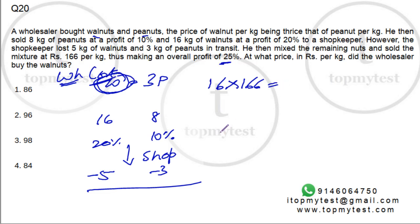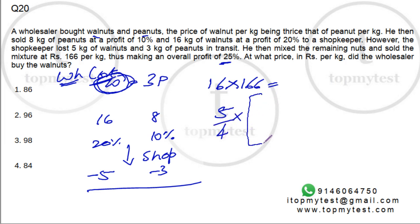This selling price is 25% higher, which means it's 25% more than the cost. 25% is one-fourth, so the selling price is cost plus one-fourth the cost, which equals five-fourths the cost. So the shopkeeper paid five-fourths of his cost to the wholesaler.